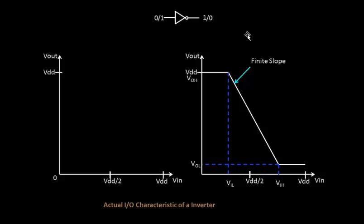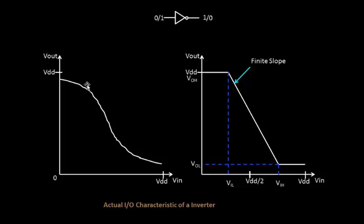Now let's look at a more practical curve. We assume VOH equals VDD initially, but now we'll look at a practical curve derived from the inverter by probing and plotting. This practical curve is closer to ideal but has non-idealities — curves and bends — unlike the straight finite-slope version. In the mid-range, the slope is still a negative value.